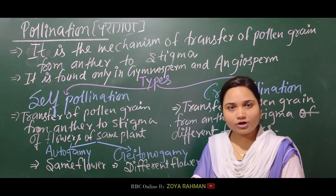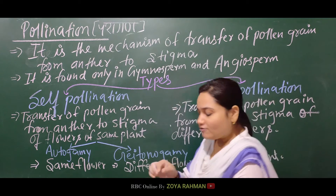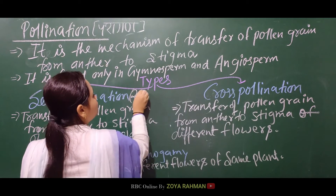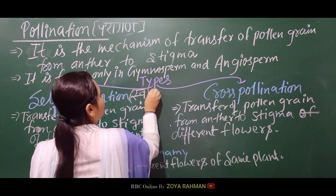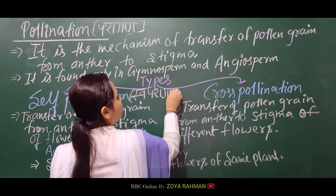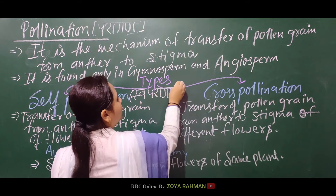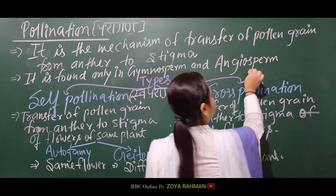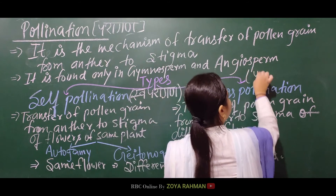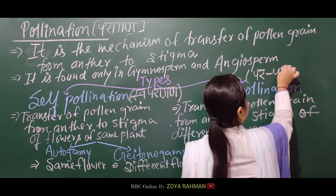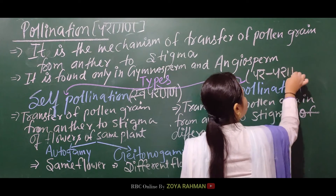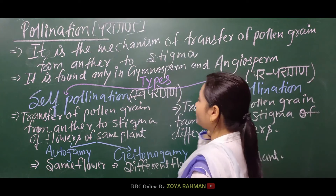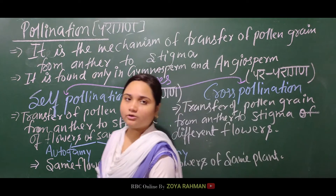Types of pollination are two: self-pollination, which is called swapragan in Hindi, and cross-pollination, which is called parparagana. So our swapragan and parparagana are the two types of pollination.